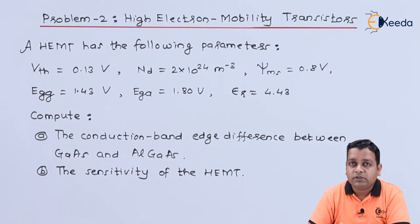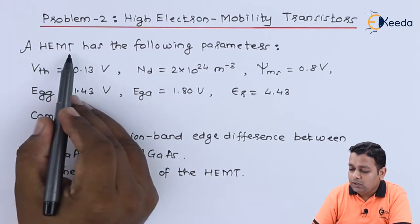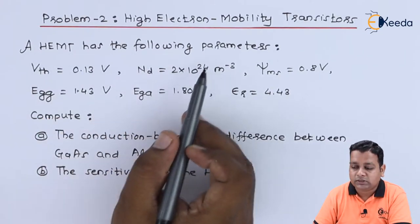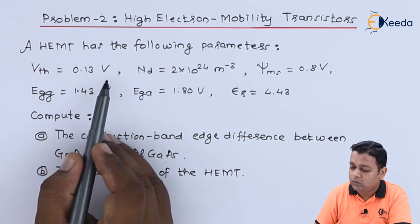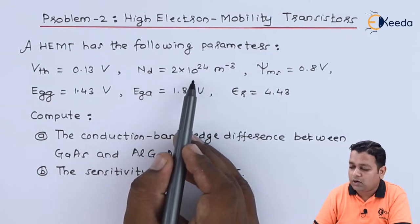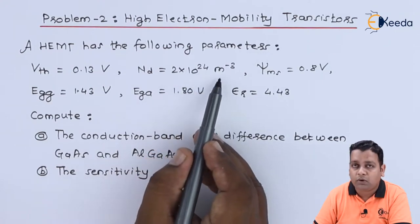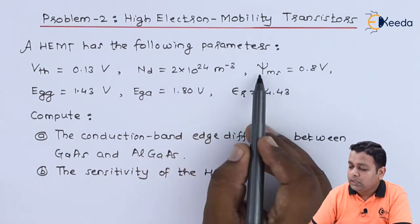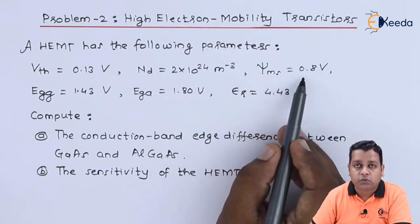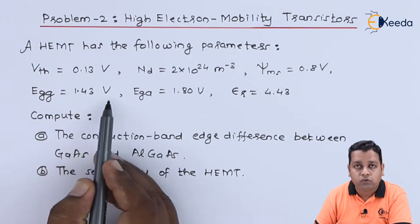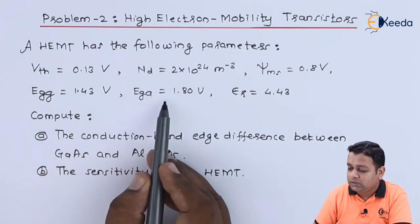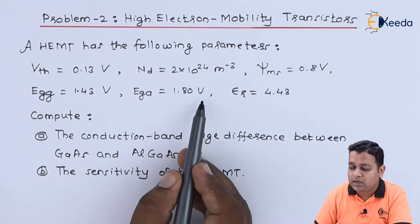Here the problem statement for high electron mobility transistor HEMT is given to us. HEMT has the following parameters: Vth equals 0.13 volts, ND equals 2 into 10 to power 24 per meter cube, psi suffix MS equals 0.8 volts, E suffix GG equals 1.43 volts, E suffix GA equals 1.80 volts.